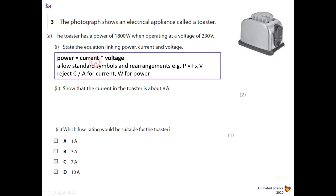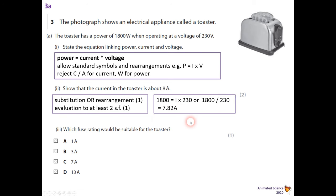Now you need to show that the current in the toaster is about eight amperes. So they would want a substitution or rearrangement for one mark and an evaluation to at least two significant figures for the second mark. So I've got 1800, which is obviously the power, equals I times 230.